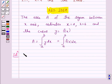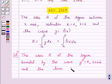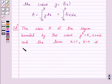So, the area of the region bounded by the curve y² = x, x = 1, and x = 4 is given by the integral from 1 to 4 of y dx.